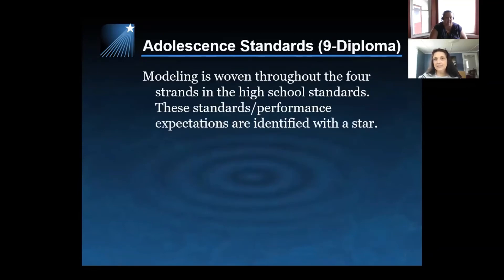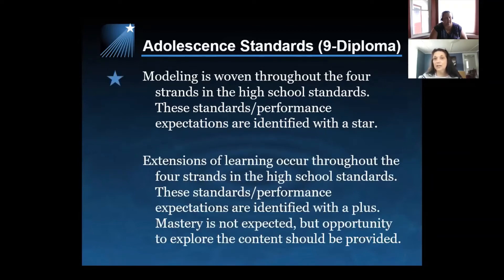The adolescent standards — nine through diploma — have modeling woven throughout the four strands in high school. Those standards and performance expectations are identified with a star. Modeling is an expectation for all of our students. In addition to our modeling standards, we have extensions of learning. These occur throughout the four strands at the high school level, and these expectations are identified with a plus. It is important to note that mastery is not expected of all students on these extension standards, but it is expected that opportunity is provided to all students to explore the content.